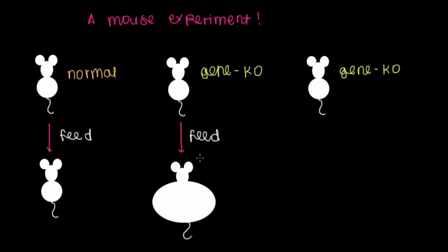But when they let the genetically altered mouse eat for as long as it wanted to, this guy got huge. The researchers found that when this gene was missing, these mice tended to eat more because they were hungrier.